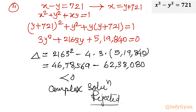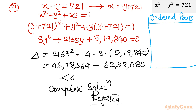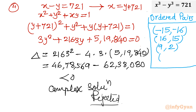So our final answer: there are four ordered pairs for the given Diophantine equation. From the first system: (-15, -16) and (16, 15). From the second system: (9, 2) and (-2, -9). These are the only integer solutions possible. I hope this video was meaningful to you — don't forget to like, share, and subscribe. Bye-bye till the next video. Good luck.